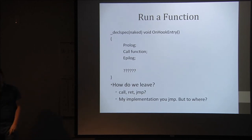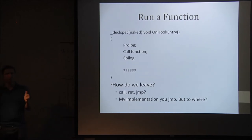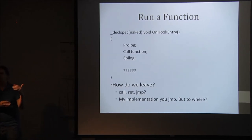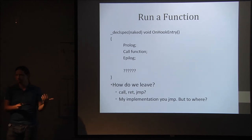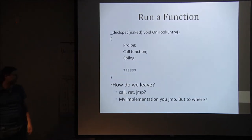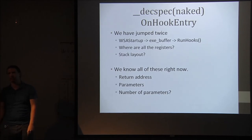This is what the on-hook entry for a simple call function looks like: we've jumped to the on-hook entry, push the prolog to protect registers, call our function — it prints 'hey you called Winsock startup, good job' — then epilogue. Now we have to leave this function. You can ret from a declspec naked function, but retting would pop the stack, and we didn't push anything on the stack for this. I decided to stay with the simple jump because it was all I needed. But where do you jump back to? We're two jumps away from our original place.